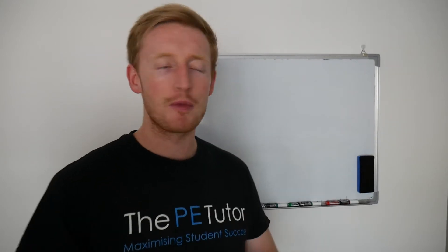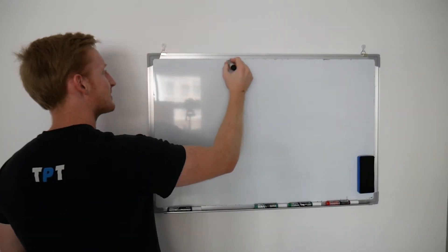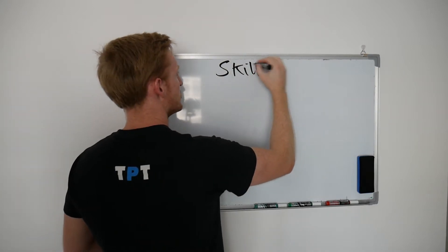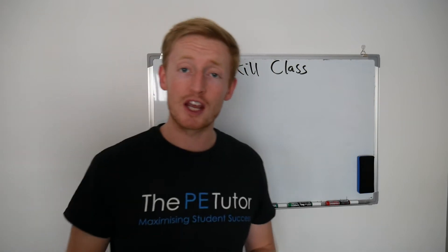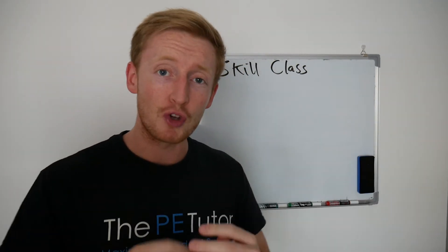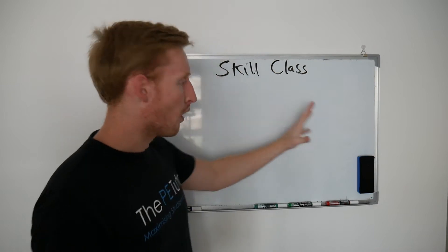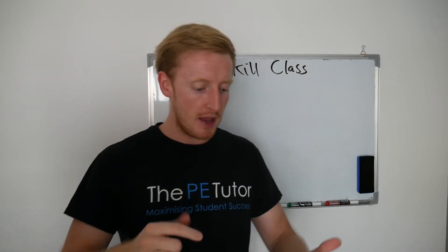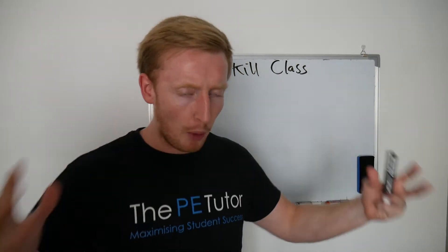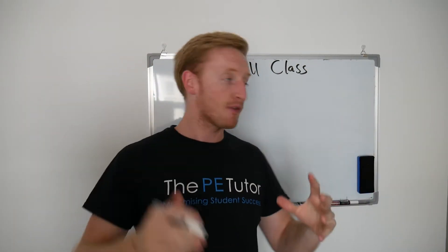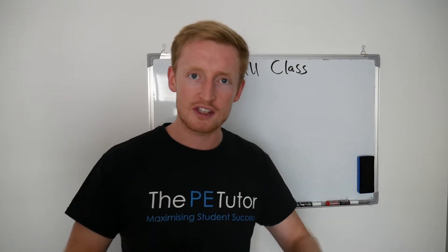Hello, welcome to this lesson from the PE Portal. Today we are going to be looking at skill classifications. We're going to be looking at the four different continua that you can use to categorise different skills - be it small ones or large ones, fast or slow, complex or simple. Lots of different categories that you can start to sort skills into.